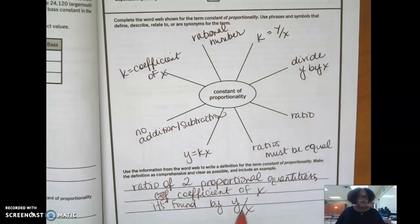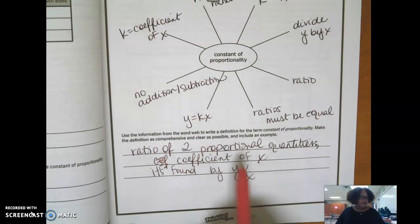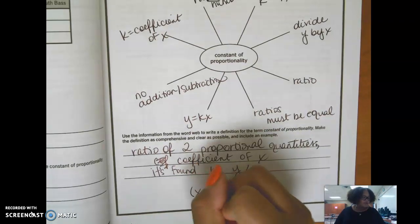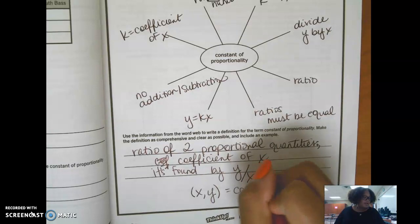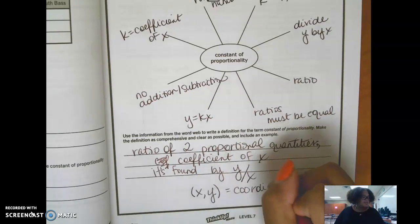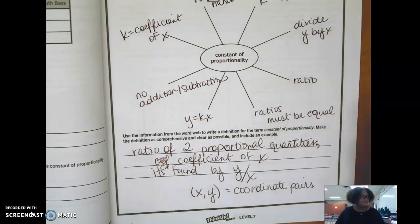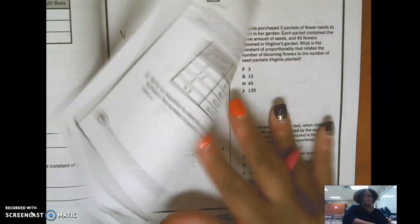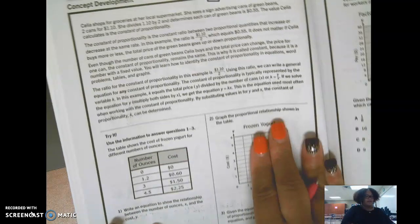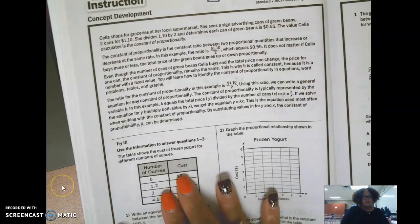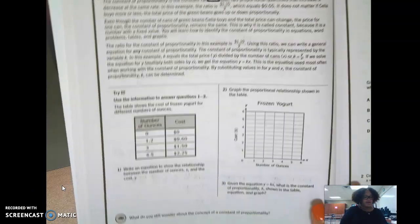And it's found by y over x. Okay, remember you can get y over x from a table and get it from a graph. And remember, use the coordinate pairs to help you. Alright, so on to notes from unit 5.